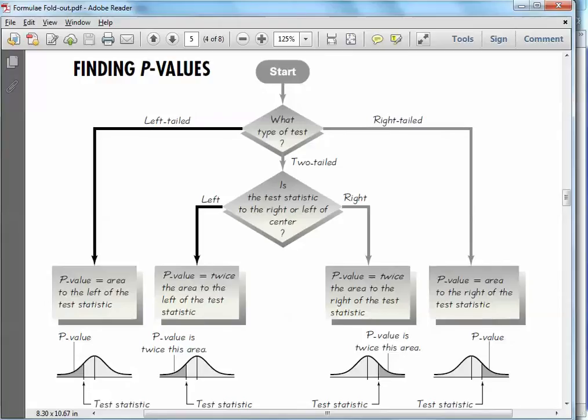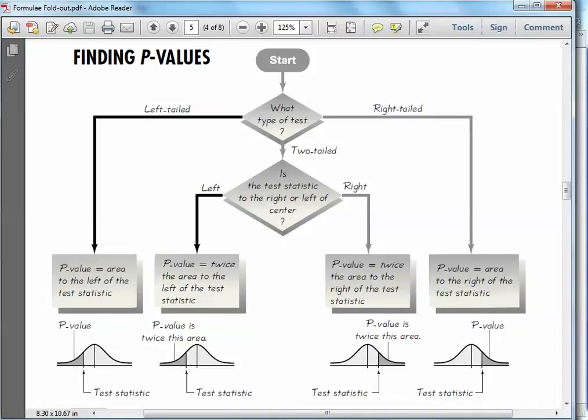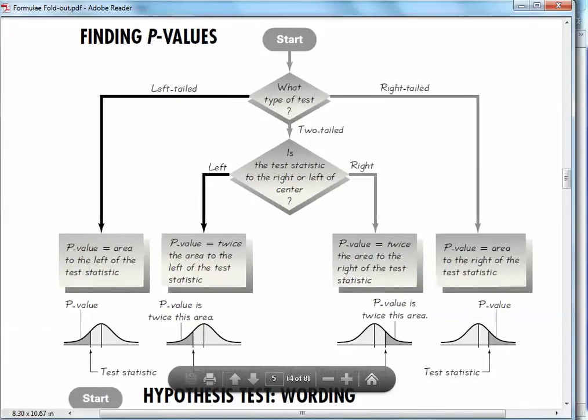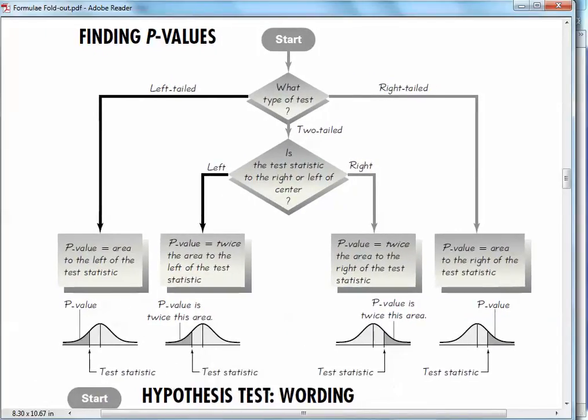You first decide what kind of test are you doing. Are you doing a left-tailed test, a right-tailed test, or two-tailed test? Now that's dependent on the alternative hypothesis. So you look at your alternative hypothesis.